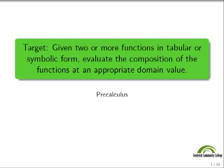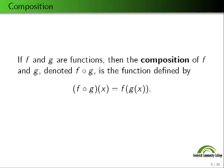The learning target here is: given two or more functions in tabular or symbolic form, evaluate the composition of the functions at an appropriate domain value. First, we need to define composition. If f and g are functions, then the composition of f and g — denoted f∘g, called 'f composed with g' — is defined by f∘g(x) = f evaluated at g(x). You take g, evaluate it at x, then plug that output into f.